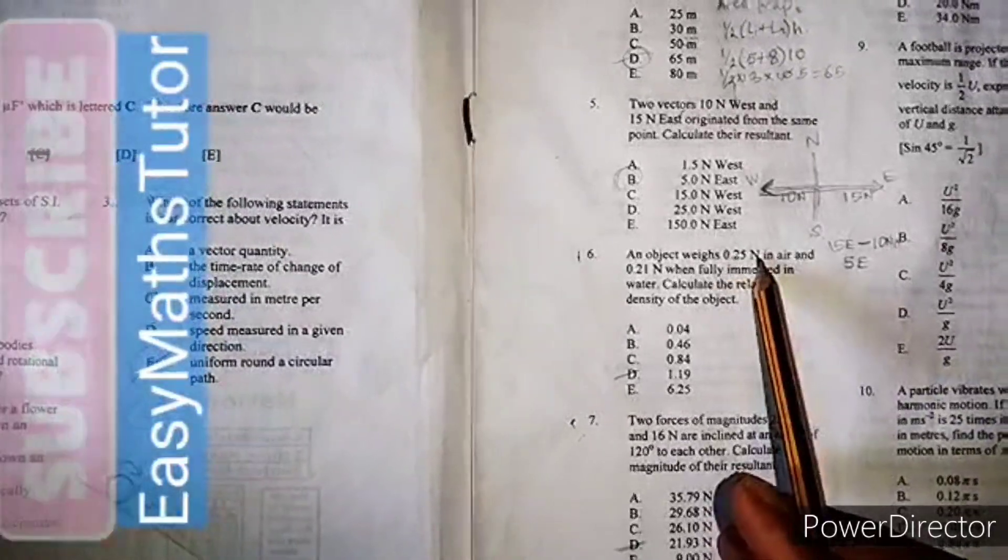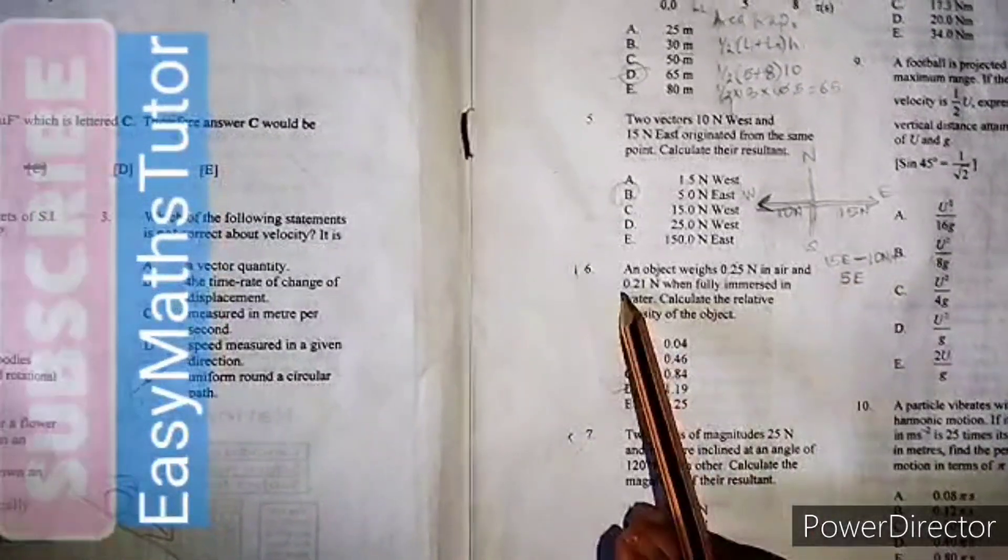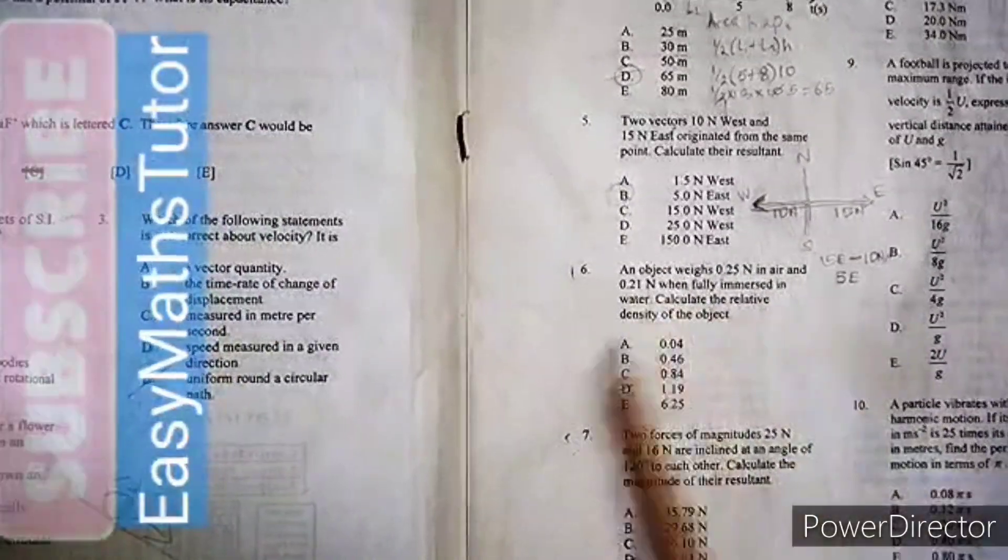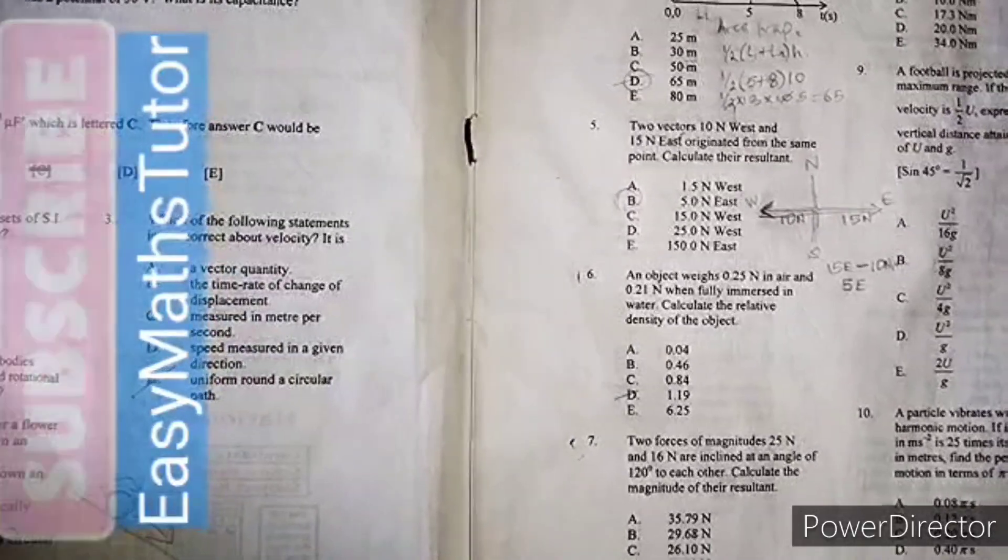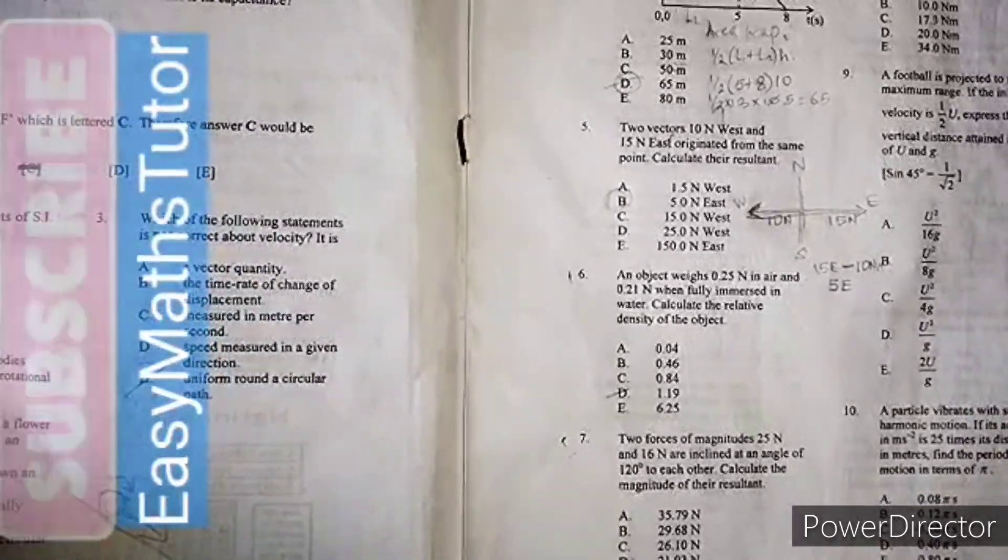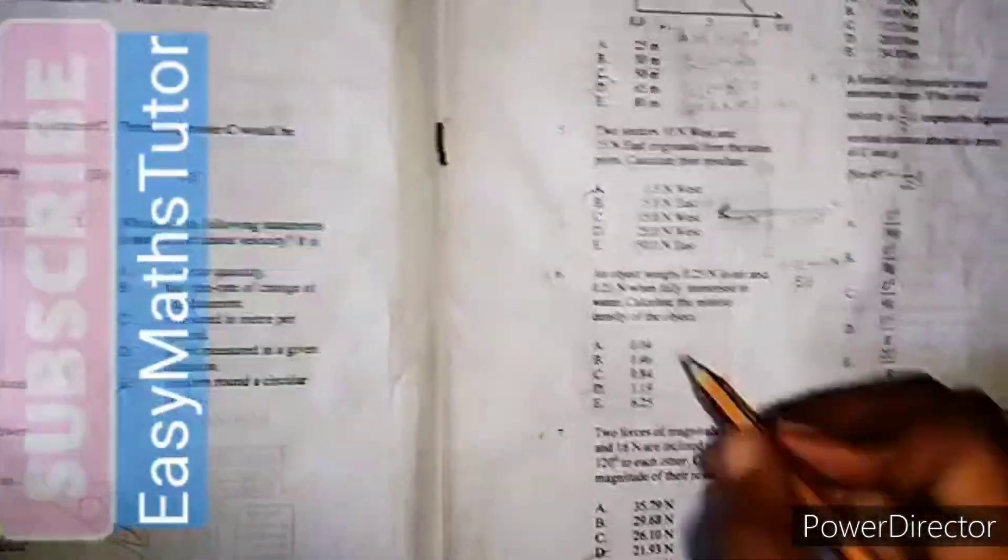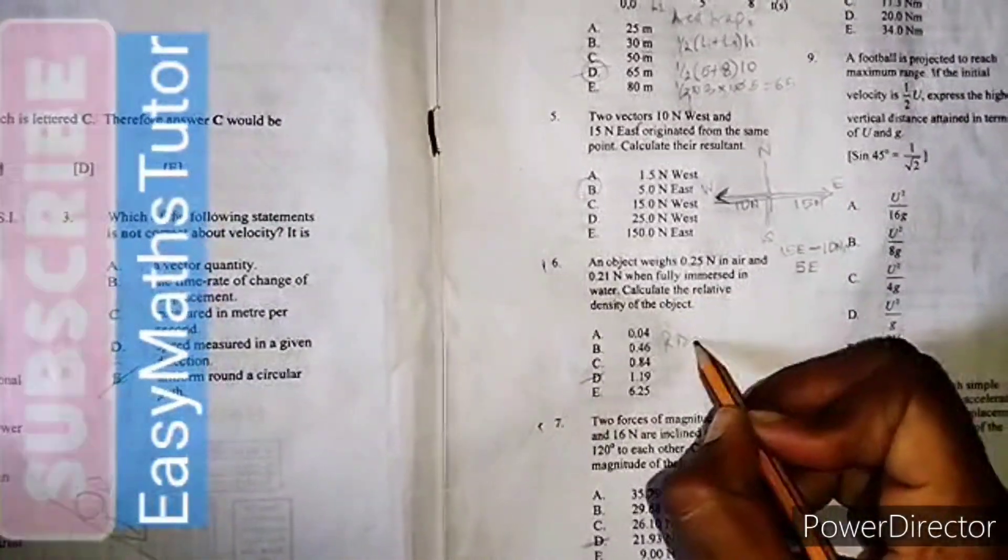Number six: An object weighs 0.25 newton in air and 0.21 newton when fully immersed in water. Calculate the relative density of the object.